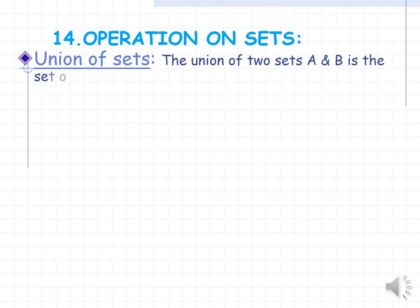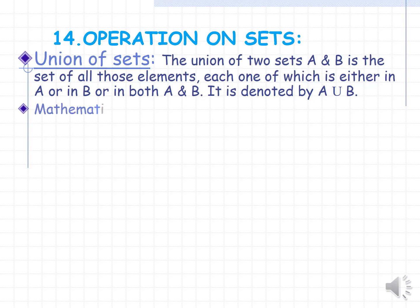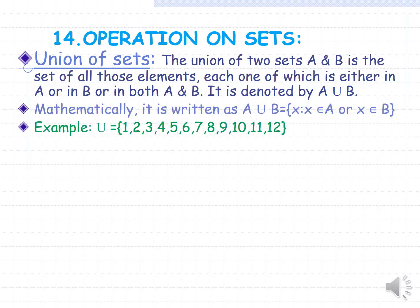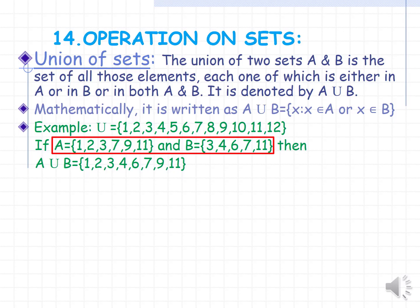Operation on sets. Union of sets. The union of two sets A and B is the set of all elements which are either in A, or in B, or in both A and B. It is denoted by A ∪ B. Mathematically, it is written as A ∪ B = {x : x ∈ A or x ∈ B}. For example, using the universal set of numbers 1 to 12, if A = {1, 2, 3, 7, 9, 11} and B = {3, 4, 6, 7, 11}, then for A ∪ B we put all elements of set A and B.